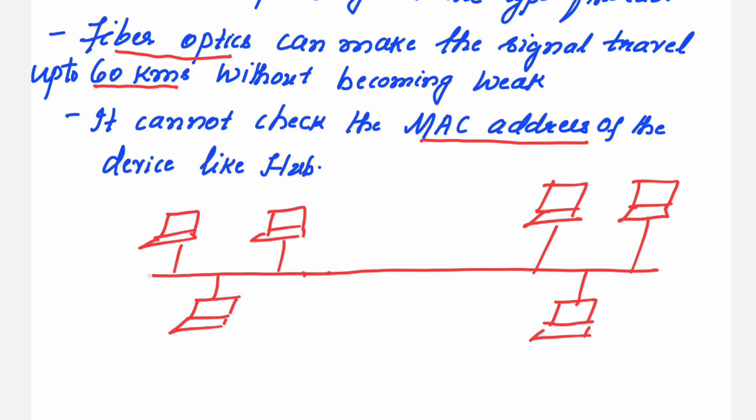Now, when the signal starts moving from this particular node, let us assume that this node is sending the signal to some other node in the other part of the network. Then, if this distance is too large, the signal becomes weak. That means the intensity of the signal is becoming low as it moves from this end of the network to the other part of the network.